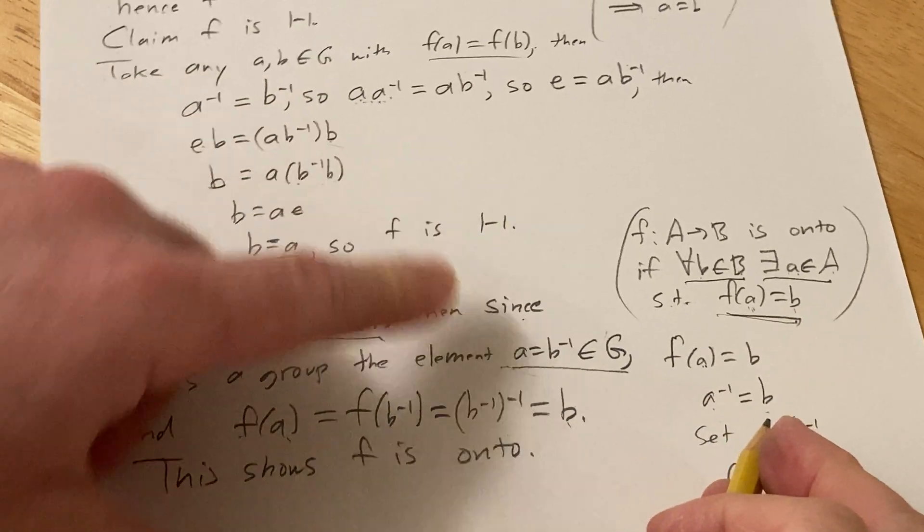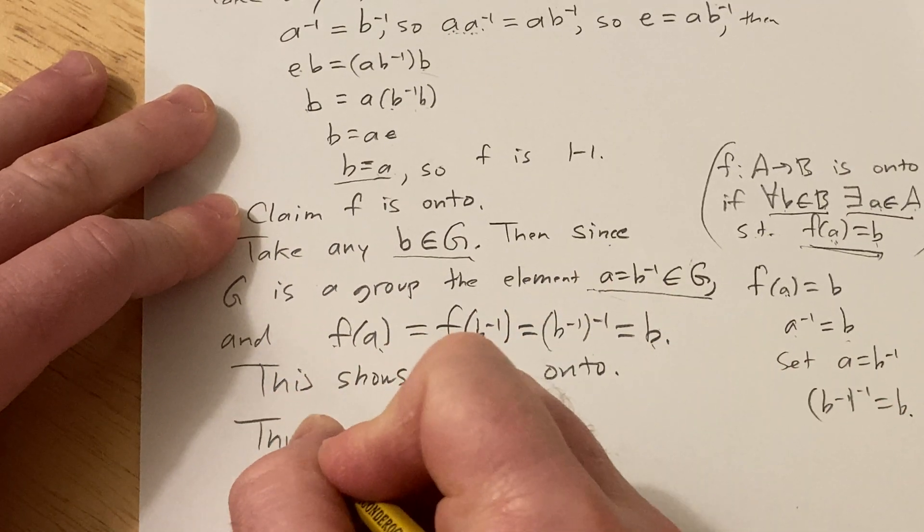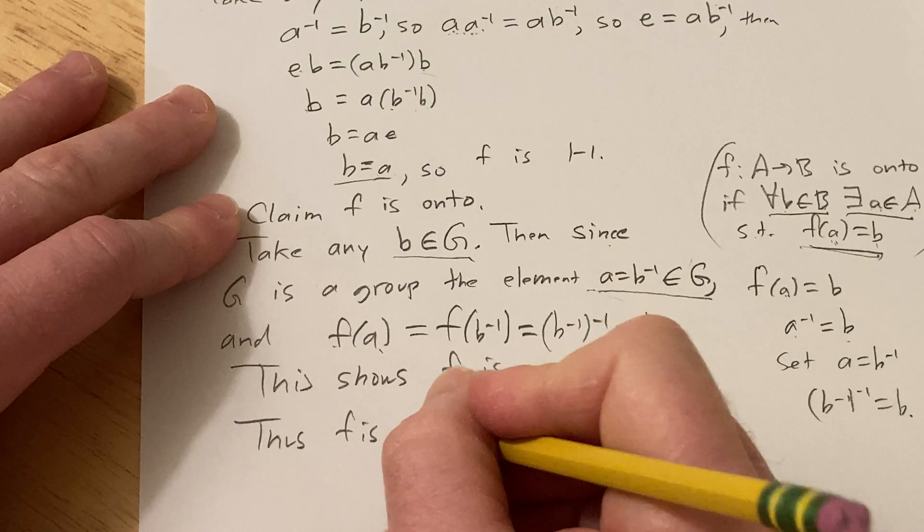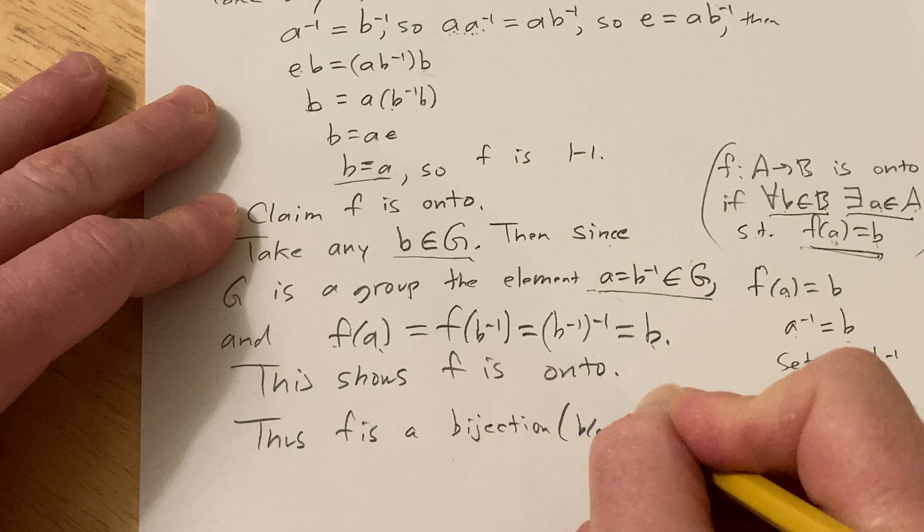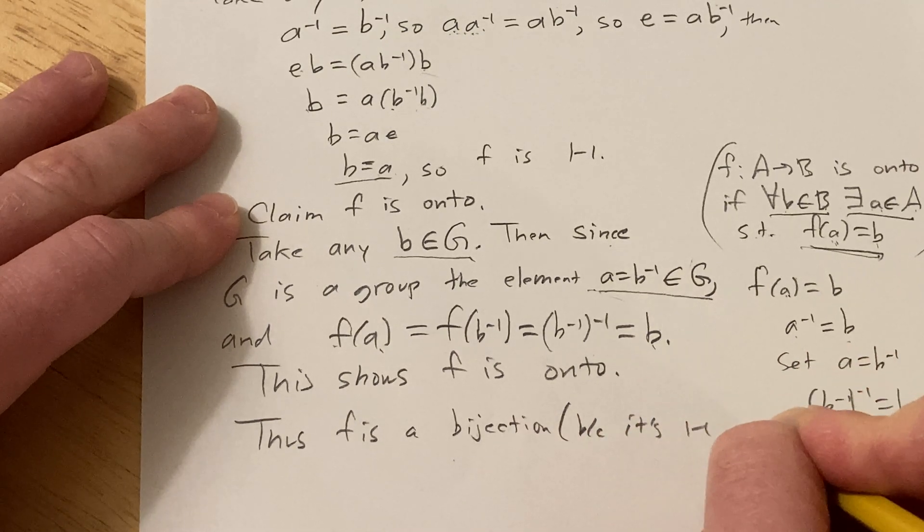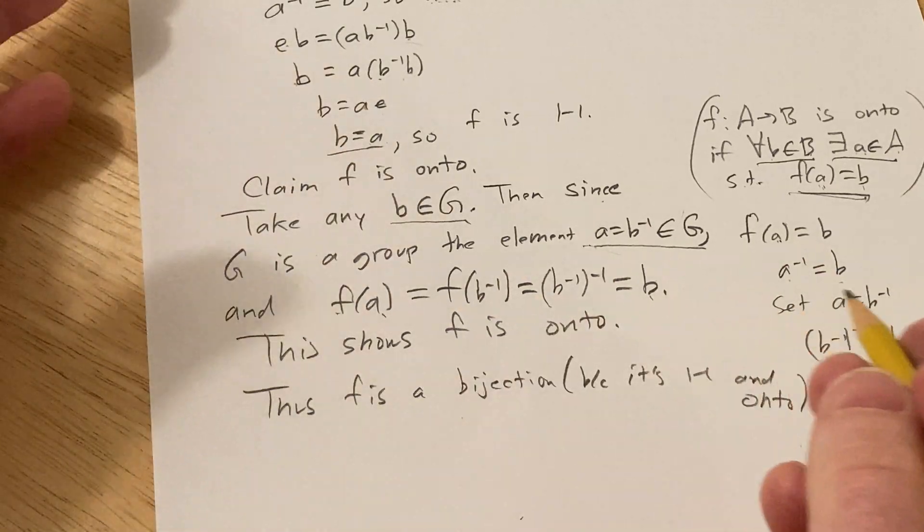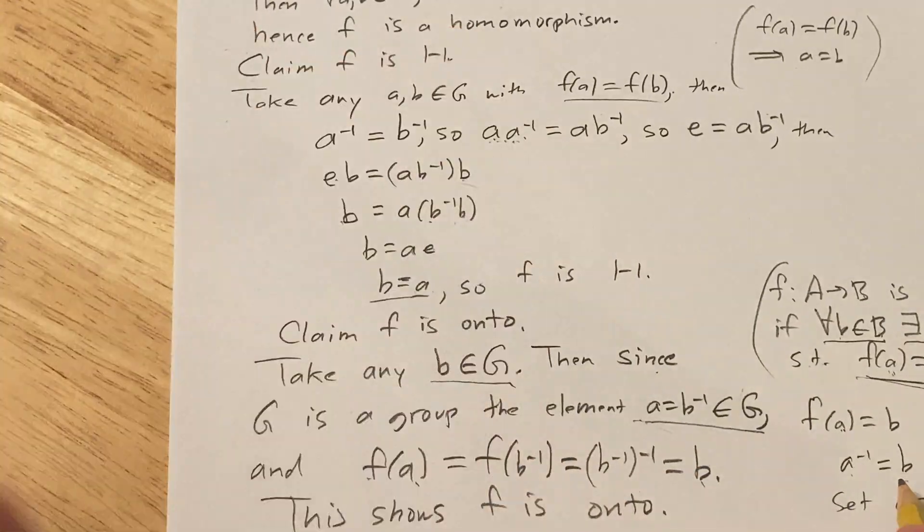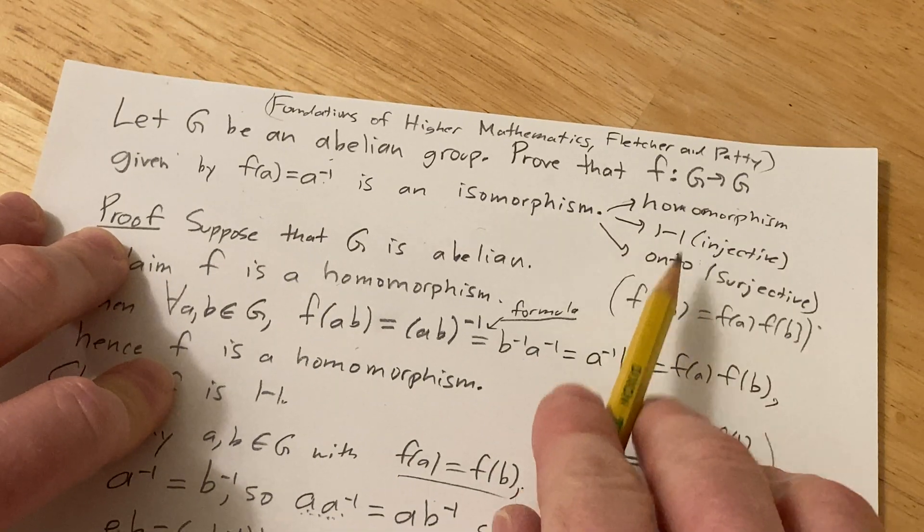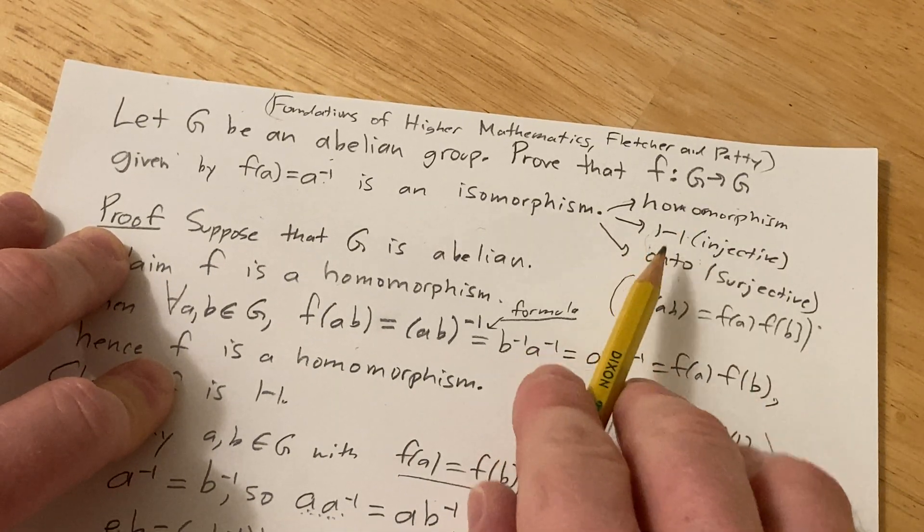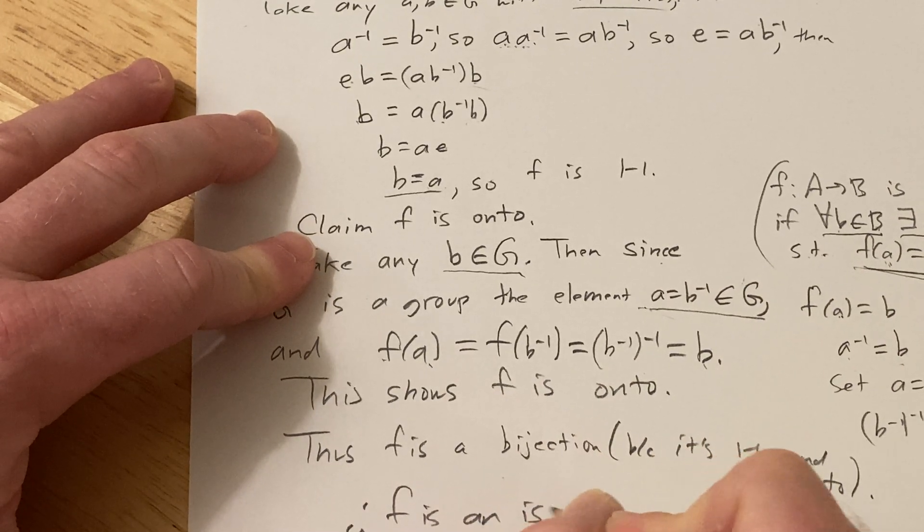Because f is one to one and onto, it's a bijection. So thus it is a bijection because it's one to one and onto. And then therefore it's an isomorphism. So it's a bijective homomorphism, so it's an isomorphism. Or as I said here, it's one to one, onto, and a homomorphism. Same thing, that's what it means to be an isomorphism. So therefore f is an isomorphism.